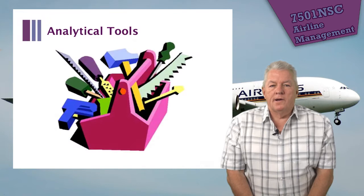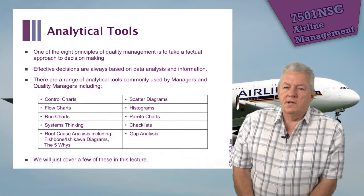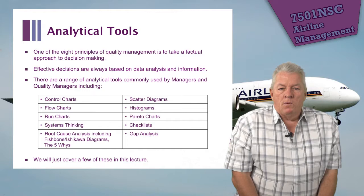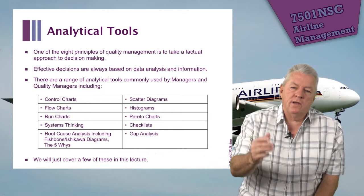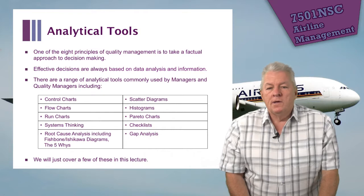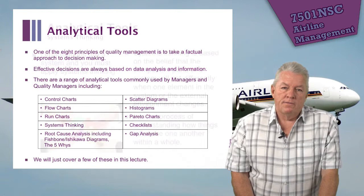Firstly, analytical tools. One of the eight principles of quality management is to take a factual approach to decision making. There are many ways to make effective decisions based on data analysis, and information is a very good way to aid the decision-making process. There's a range of tools we can use for this, shown here. Today we'll just look at a few of them.